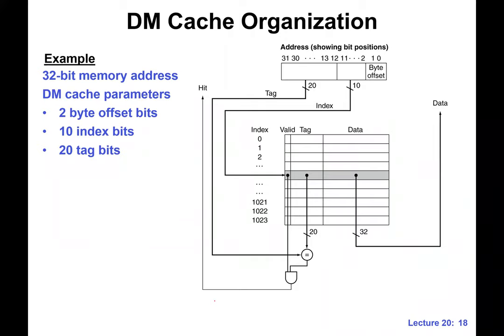Here's another example. We assume a 32-bit memory address. We assume two bits for byte offset, meaning four bytes per block. We have 10 bits for index, giving us two to the 10, which is 1024 cache blocks. The remaining 20 bits are the tag bits.